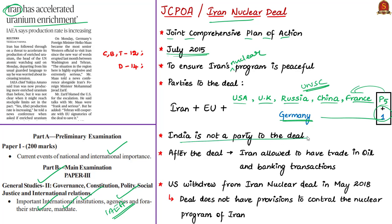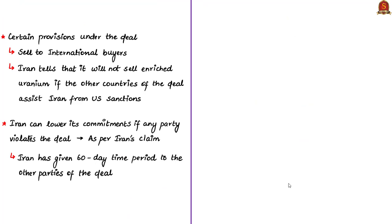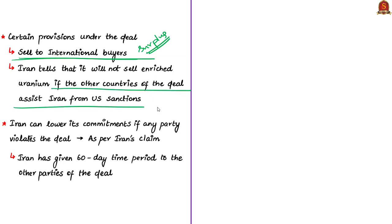After signing the deal, Iran was allowed to have trade relationships with various countries, particularly in oil and banking transactions, as the United States lifted sanctions on Iran. But in May 2018, the United States withdrew from the Iran nuclear deal, feeling the deal did not have enough provisions to effectively control Iran's nuclear program. One important provision of the deal is that Iran cannot hold surplus enriched uranium and must sell it to international buyers. Now, facing huge US sanctions, Iran says it will not sell surplus enriched uranium if the parties to the deal do not assist Iran against US sanctions, and Iran claims it can lower its commitments if a party violates the deal.